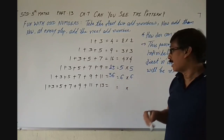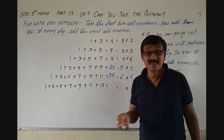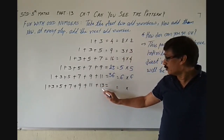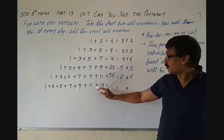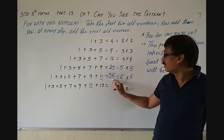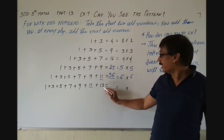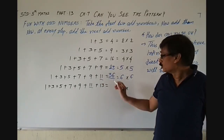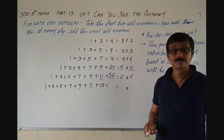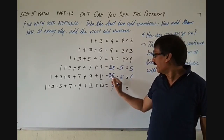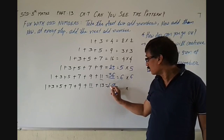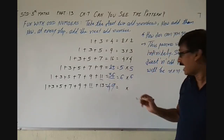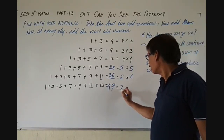Now let's go for the next. 1 plus 3 plus 5 plus ... up to 13. You don't need to go all the way back — up to 11 the total is 36. So 36 plus 13: 6 plus 3 is 9, and 3 plus 1 is 4, giving 49. And 7 times 7 are 49.